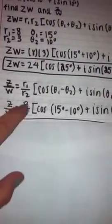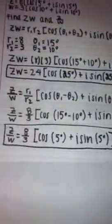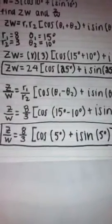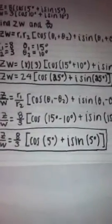Z over W equals 8 divided by 3 cos of 15 minus 10 plus I sine 15 degrees minus 10 degrees. That answer is 8 over 3 cos of 5 degrees plus I sine 5 degrees.